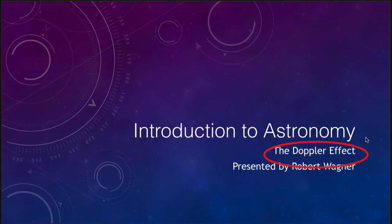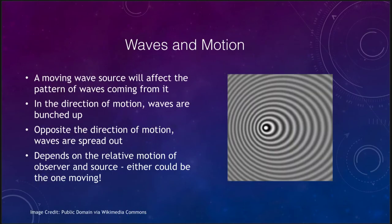About a hundred years ago, Edwin Hubble was able to use a similar method to find out that the universe was expanding because all galaxies were moving away from us. Let's look at how this works, starting with waves. When waves are moving, a moving wave source changes the pattern of waves that we see. In the direction of motion the waves get bunched up, and opposite the direction of motion the waves get spread out.